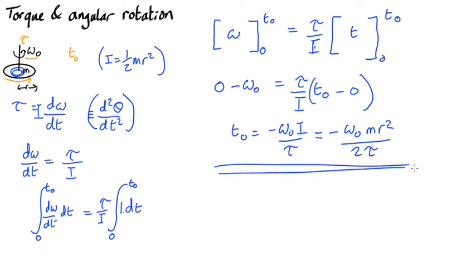So that's how long it's going to take to stop. Is this plausible? And the first puzzle is it's negative. That actually makes sense, because the torque is in the opposite direction to the angular velocity. It's slowing it down. So if the angular velocity is going this way, the torque must be going that way.